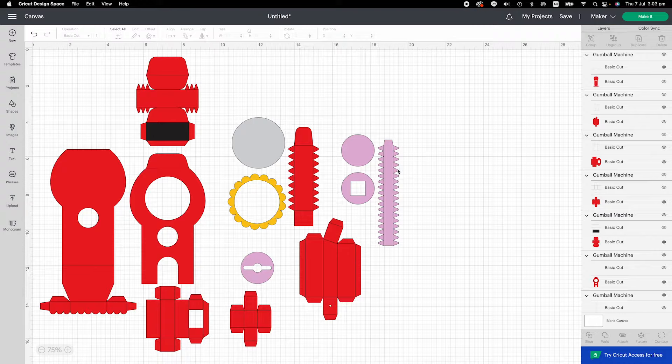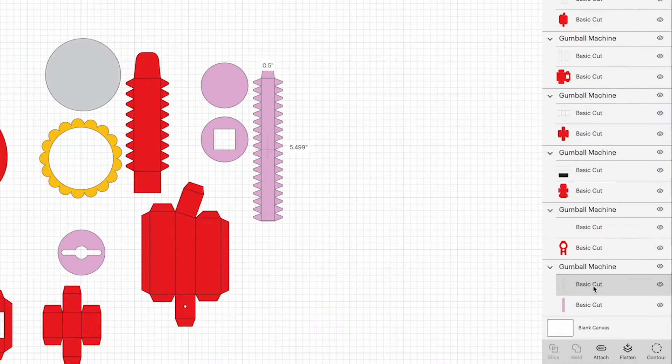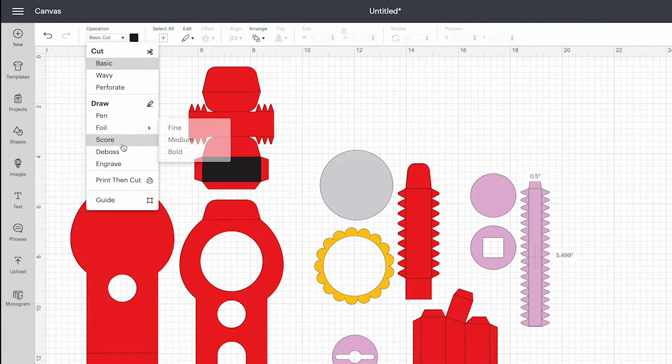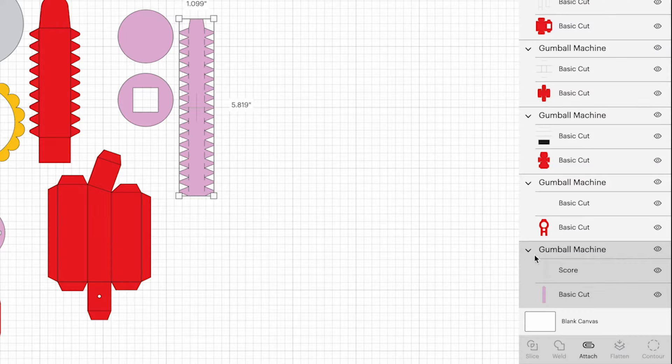We are going to change the score lines. As usual, the score line has been grouped with its elements. When you click on one element, you can see two layers have been selected. Click the top layer, go to the top, change the score. Click again and select both layers and click attach.